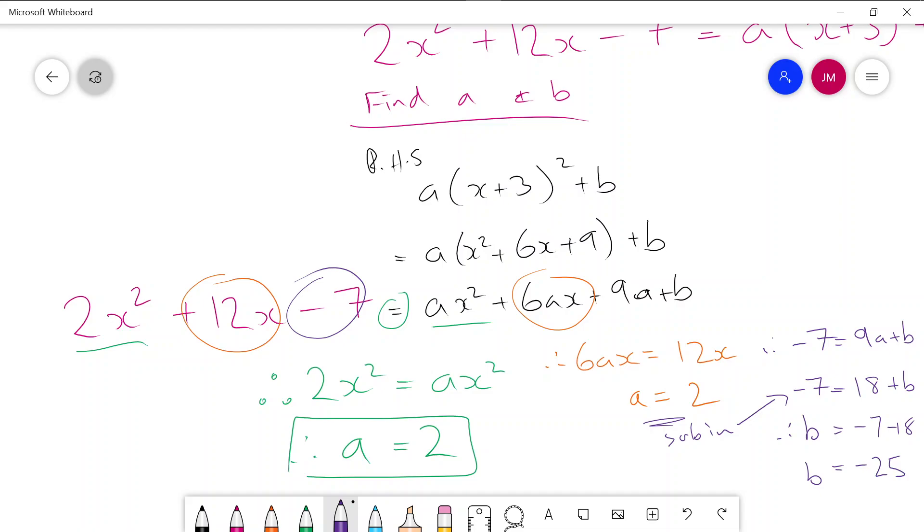So, how this helps us is that we can then say that 2x squared plus 12x minus 7 can be written as 2 times x plus 3 squared minus 25. And you go, hey, we haven't had to do any of the completing the square or that sort of fun stuff, and we've got to turn the quadratic into turning point form.